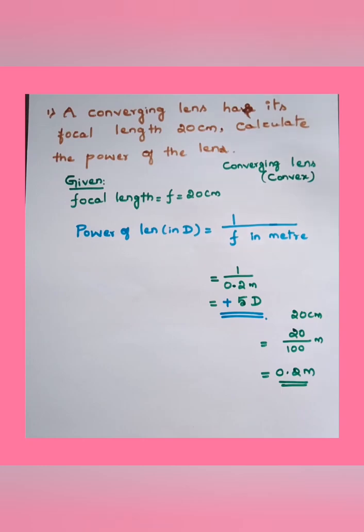Let us check out with an example numerical. For multiple choice, only these kinds of questions will be asked. A converging lens has its focal length 20 centimeters, calculate the power of the lens. So we have to write the given: focal length f equals 20 centimeters, and we have to convert that to meter - 20 by 100 gives us 0.2 meter.